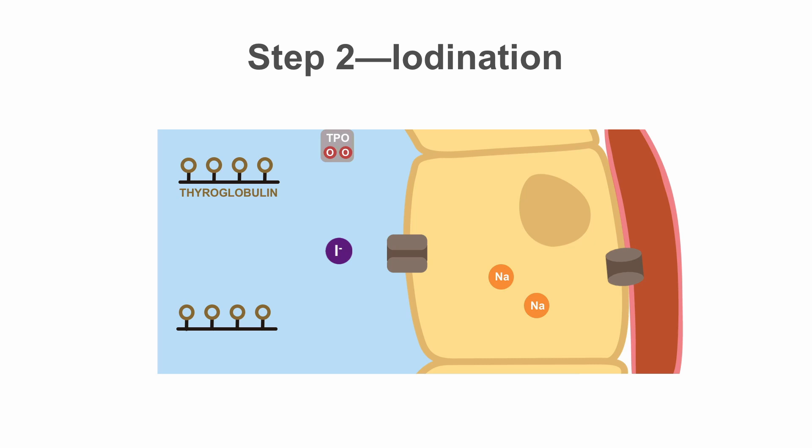In the colloid, an enzyme called thyroid peroxidase, or TPO, oxidizes the iodine and then catalyzes its binding to a protein called thyroglobulin.